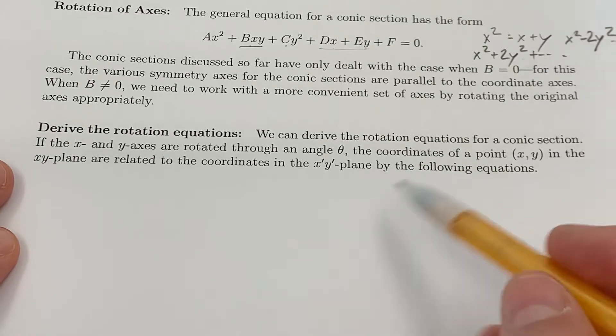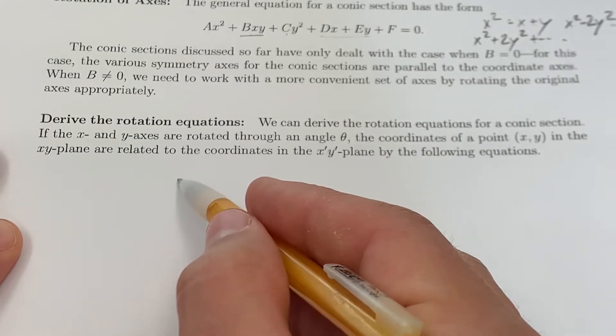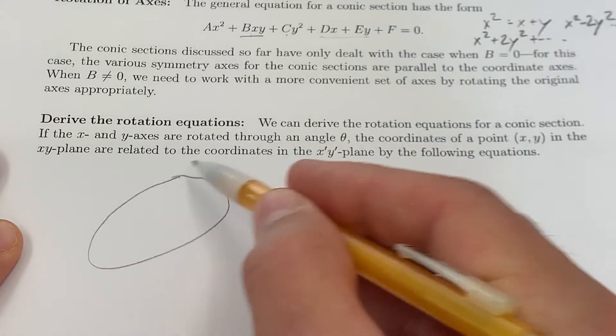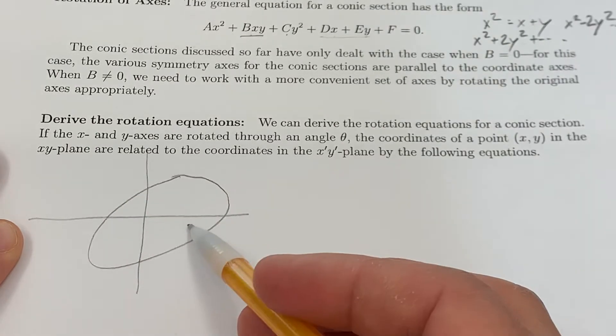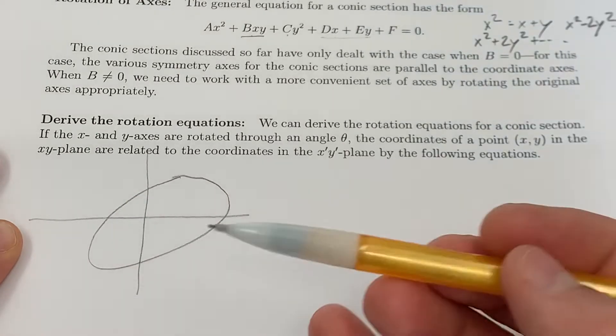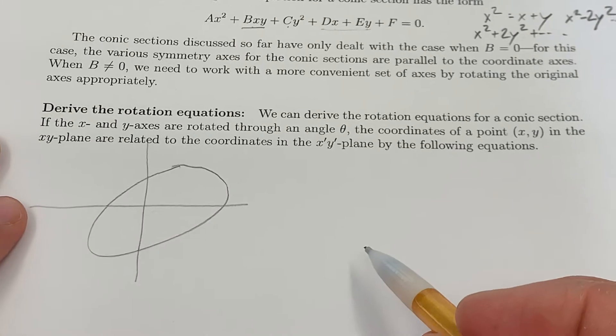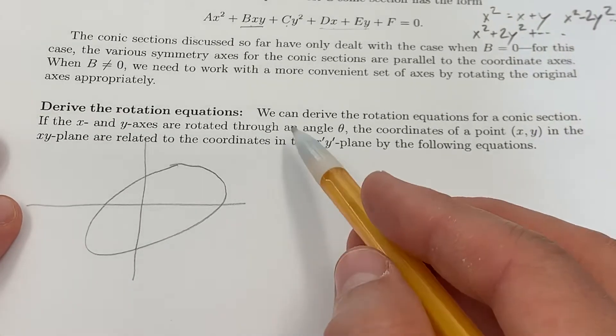Let's imagine you have an ellipse and the ellipse is just not with major axis horizontal or vertical. Well, this is still an ellipse. How do we deal with something like that? Well, this is what we do.